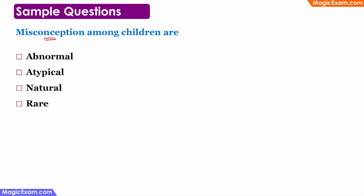Question three: misconceptions among children are — abnormal? No, they are not abnormal, they are completely normal. Atypical? No, they are typical because every child will have some misconceptions at some point. Natural? Yes — misconceptions and alternative conceptions are completely natural. Rare? No, they are not rare — everyone will have some misconception, preconception, or alternative conception in their mind. So option three — natural — is the correct answer.